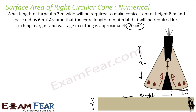First, let us find the surface area of this conical tent. If we can find the curved surface area of this conical tent, that will give us the length of cloth required minus the wastage. The curved surface area of the tent is pi × r × l.